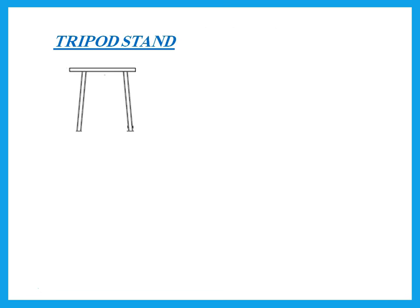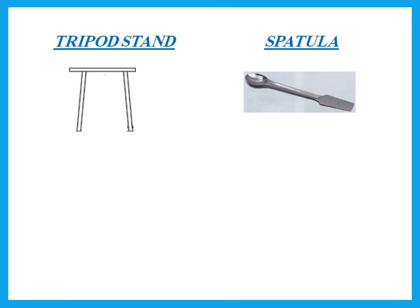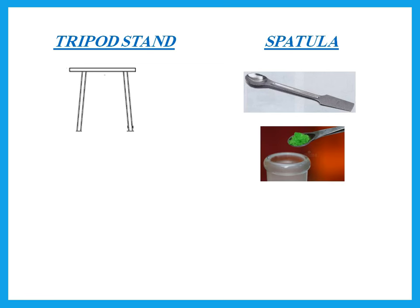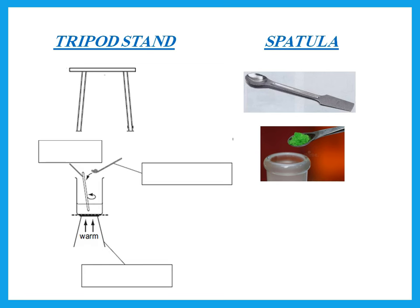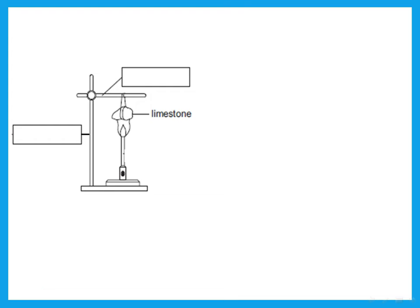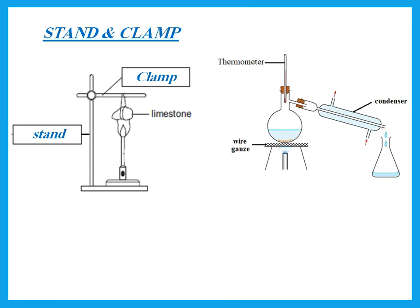This is called a tripod stand. This is a spatula, used to add solid to a reaction. The names are: spatula, glass rod, and tripod stand. This is a stand and clamp — the big one is the stand, and the one where you attach something is the clamp.